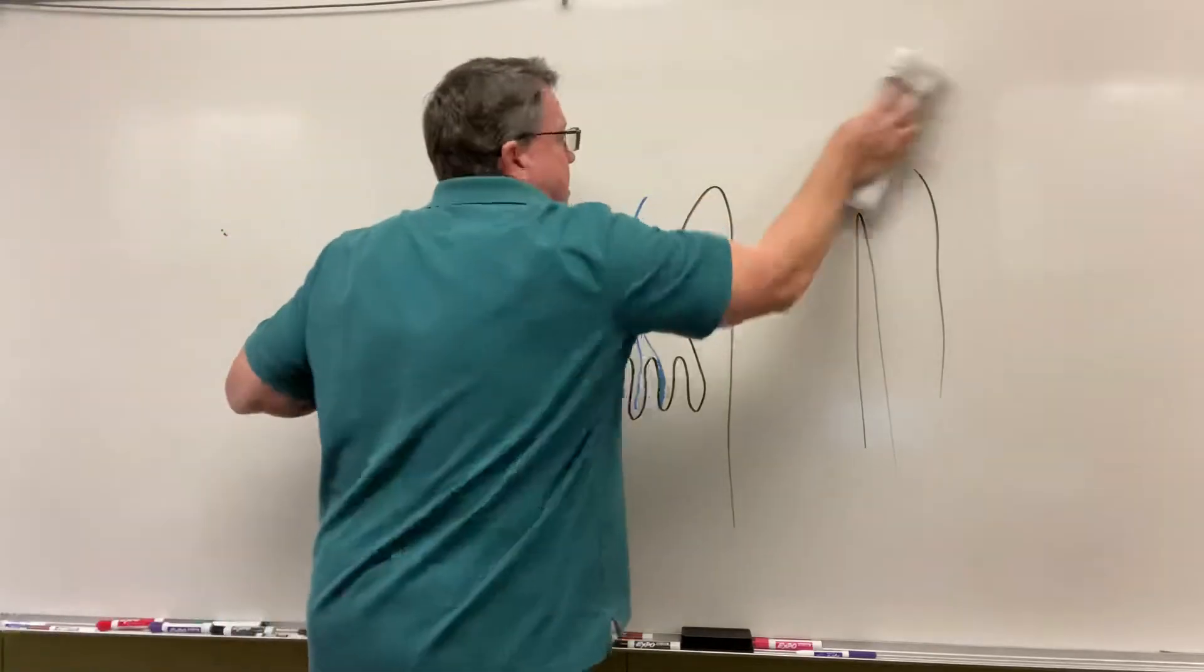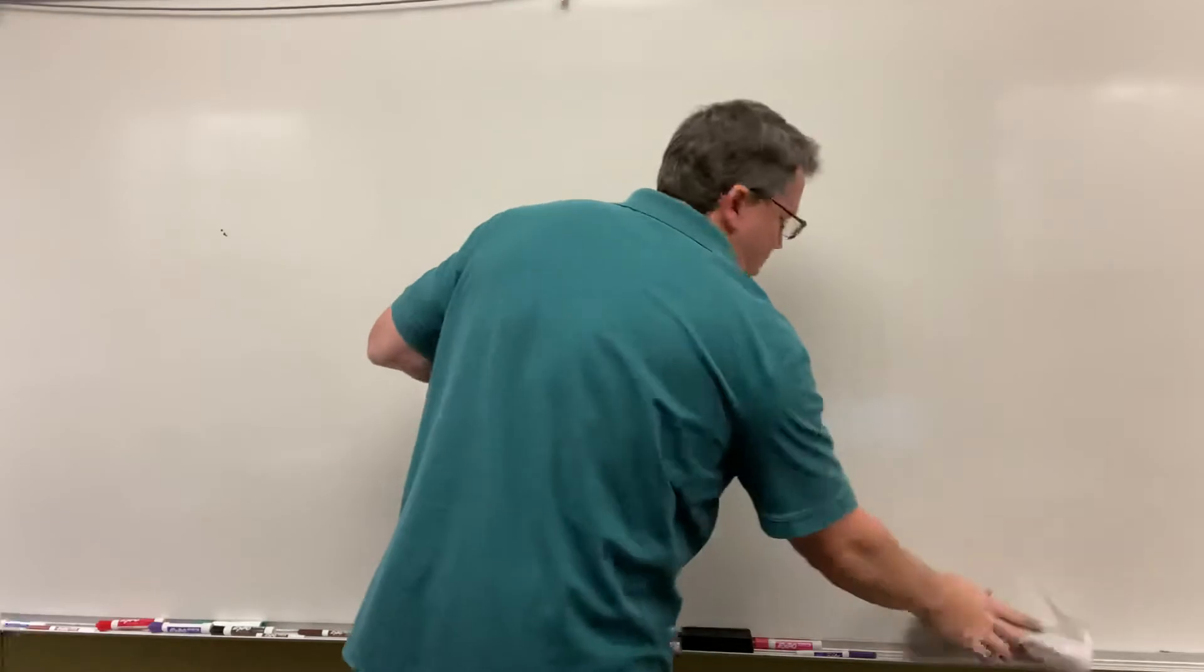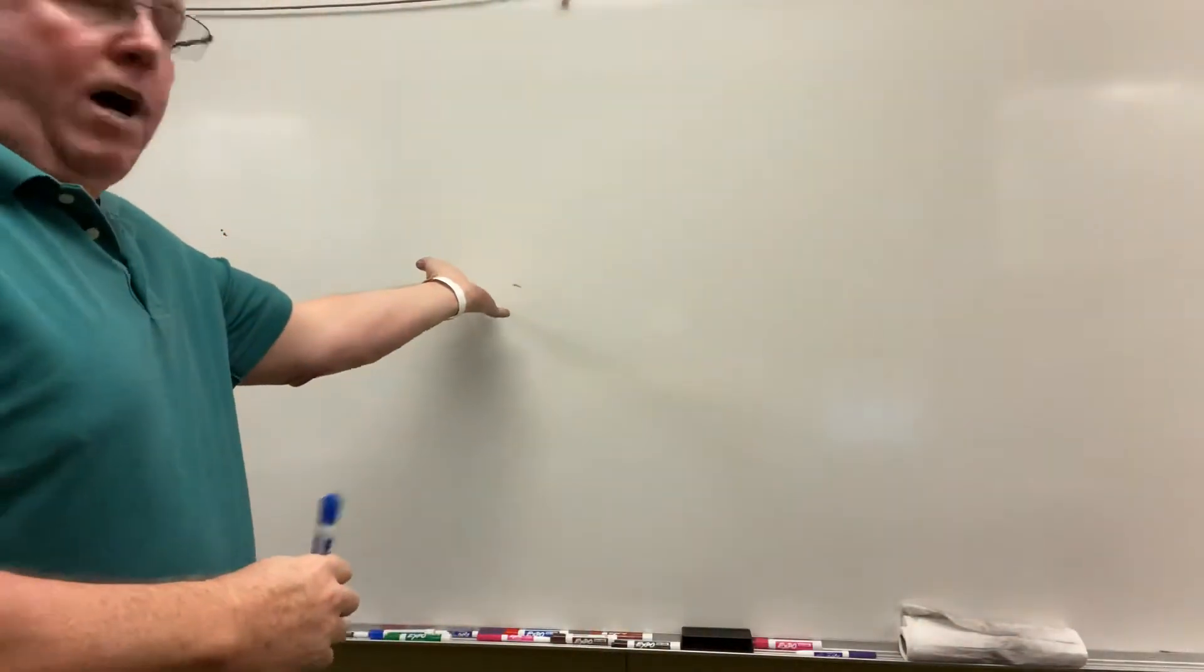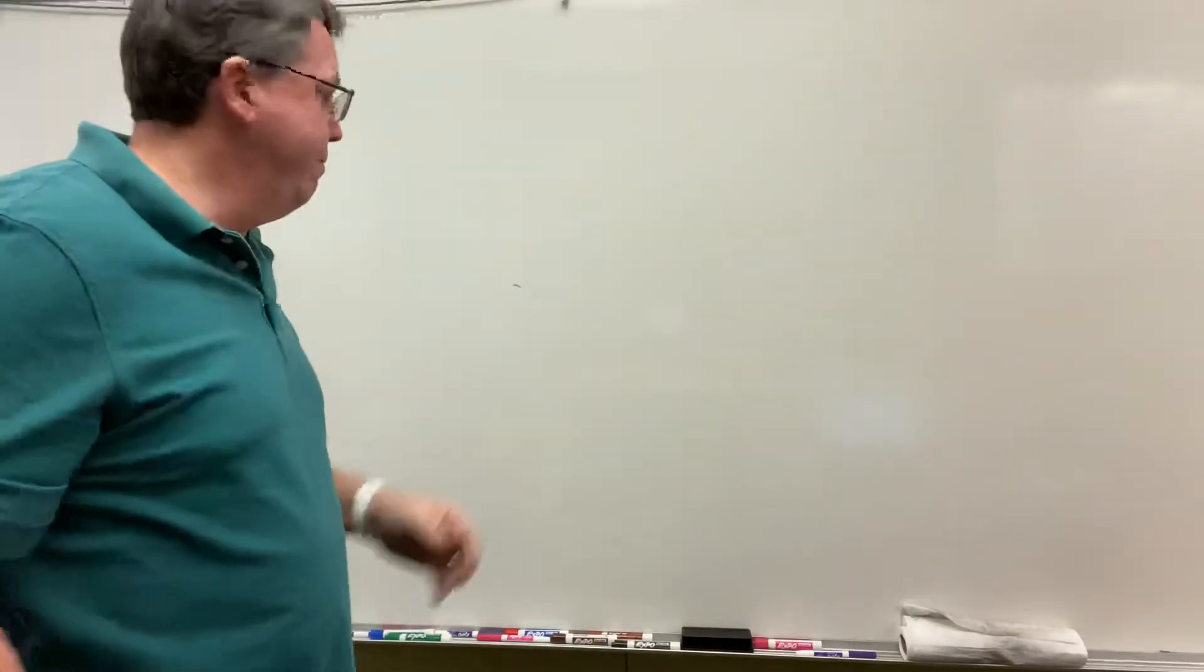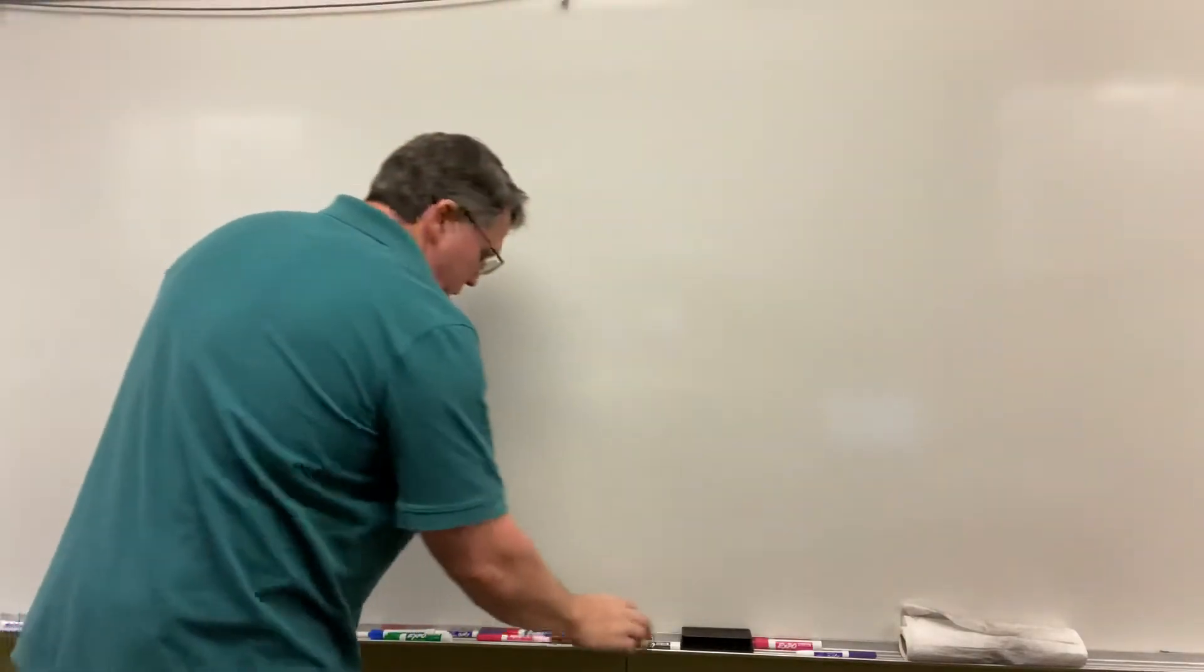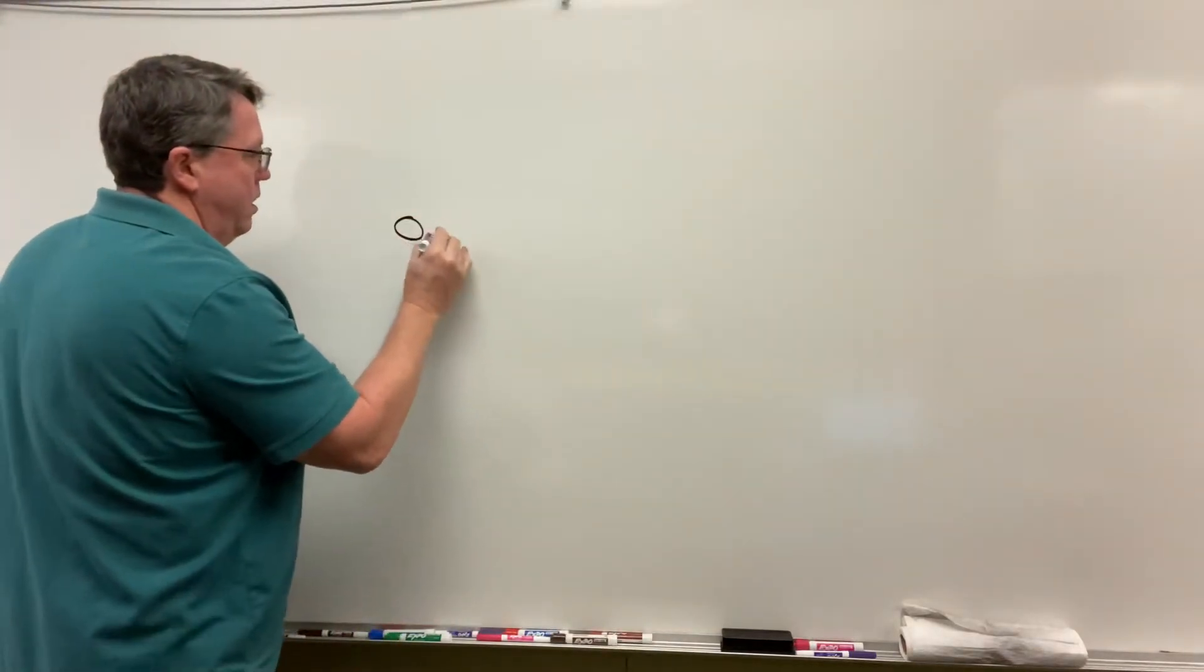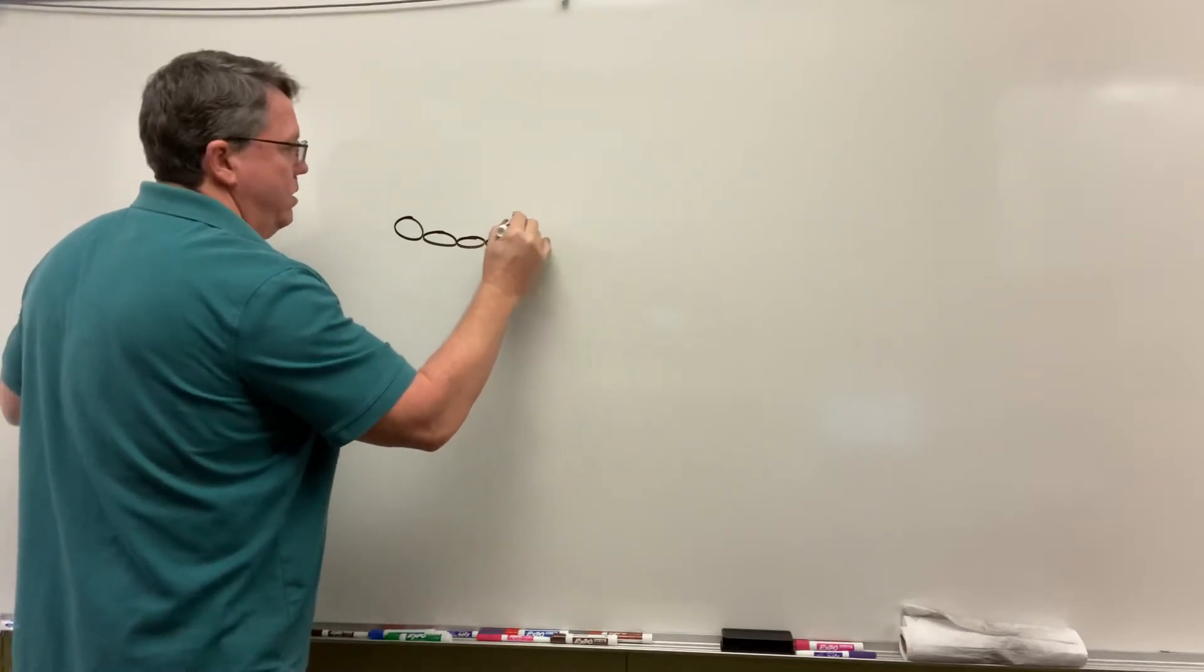On your wrist, you have bones which are called carpal bones. We're going to be looking at the wrist now. I'm going to draw it as if we're looking down into this area right here. Basically, we have carpal bones, and the carpal bones are the bones of the wrist.